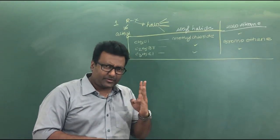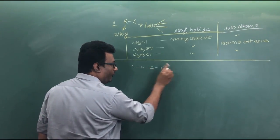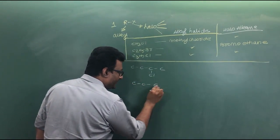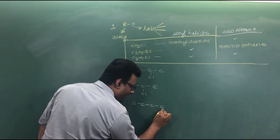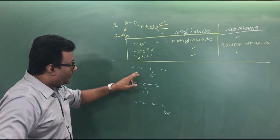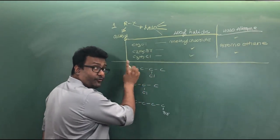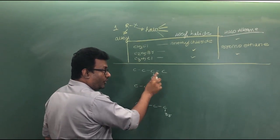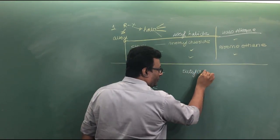Let's take three more examples. For a four-carbon chain with chlorine on the second carbon, the common name is butyl chloride. The carbon count goes one, two, three, four — one valency is not hydrogen, so this is butyl chloride.